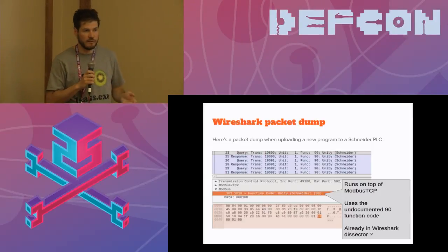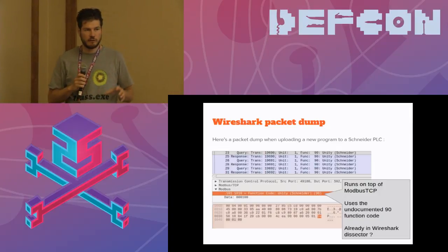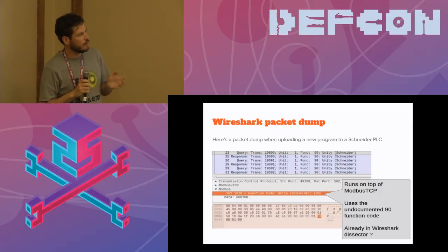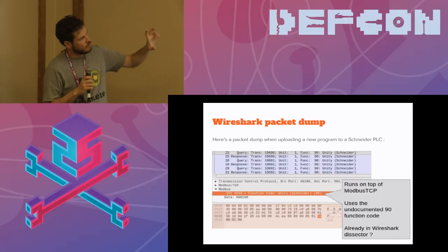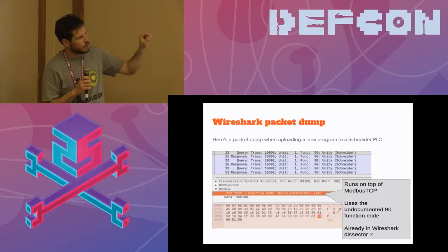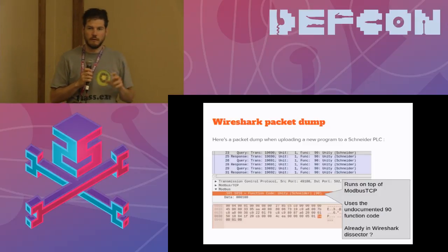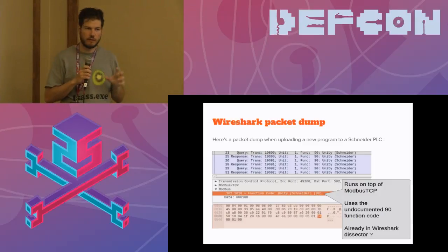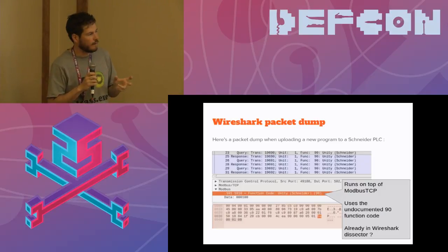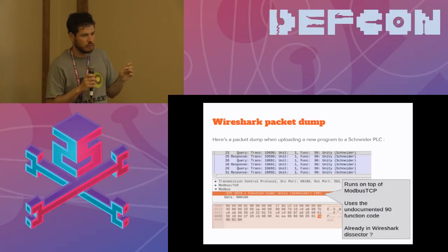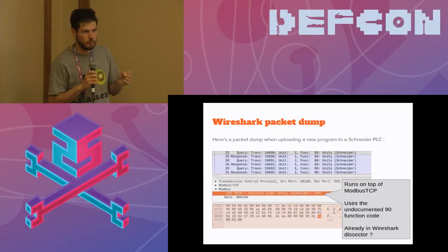How do we discover this? It's quite simple. You install a demo PLC, install Unity Pro, launch Wireshark, and look at the packet dump. Here's a packet dump when I log in to a PLC and upload a new program — it runs on top of Modbus TCP with function code 90, and it's already part of the Wireshark dissector. The use of Modbus function code 90 is not something new. I had a chat with Alexei Lagoutte, a Wireshark developer in France, and he was kind enough to add this to the Wireshark Modbus TCP dissector. So now you can detect when someone is performing admin actions on a Schneider PLC.